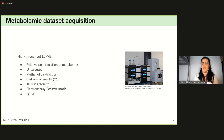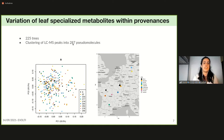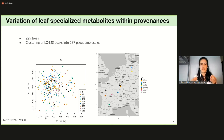We then studied the variation of leaf specialized metabolites within provenances for 225 trees. After processing our dataset, we clustered LC-MS peaks into 287 pseudomolecules. The results of a principal component analysis show the first two axes explaining 33% and 20% of the variance respectively.